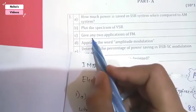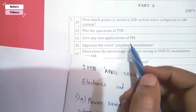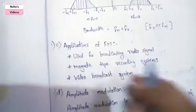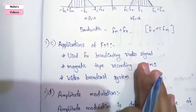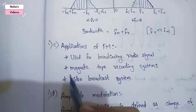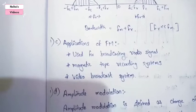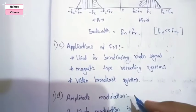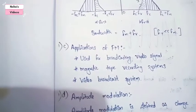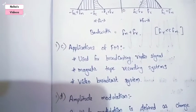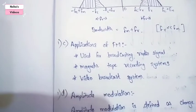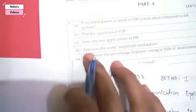The next question asks to give any two applications of FM. FM means frequency modulation. Frequency modulation can be used for broadcasting radio systems signals and magnetic tape recording. It can also be used for video broadcasting systems like TV and YouTube channels.